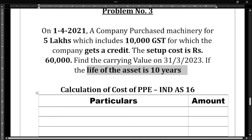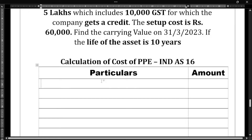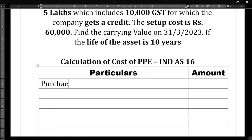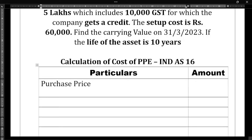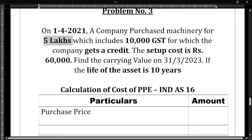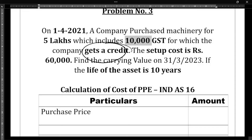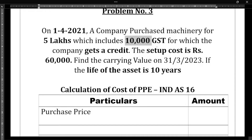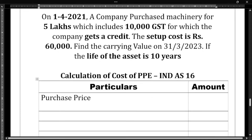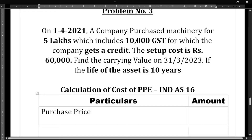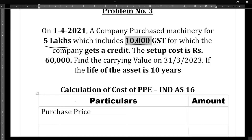This is how we will solve the problem — calculation of cost of PPE according to Ind AS 16. First, we always need to take the purchase price. If you observe the question, the purchase price is five lakh rupees, but it is inclusive of ten thousand rupees GST. Only non-refundable taxes should be added. Here, the ten thousand rupees GST is refundable, so we need to subtract it from five lakhs.